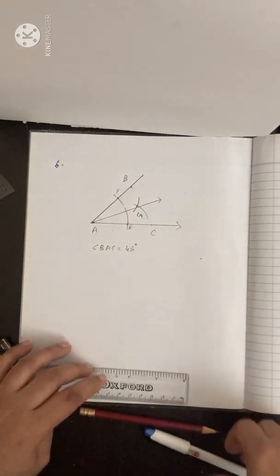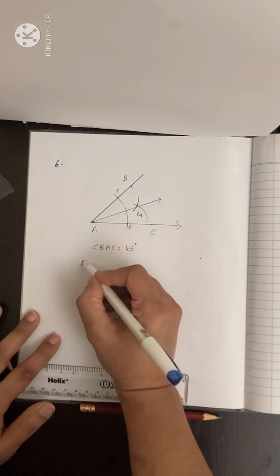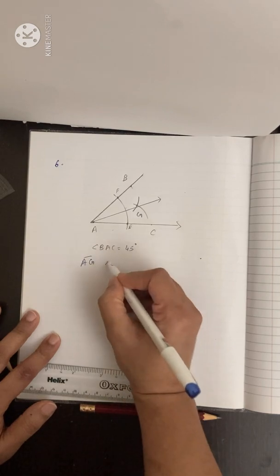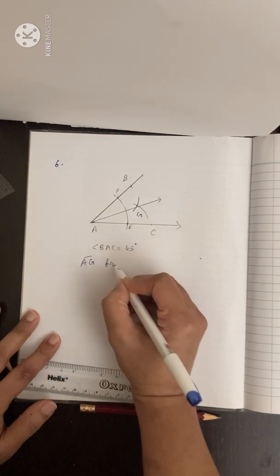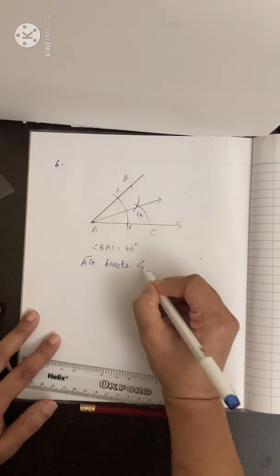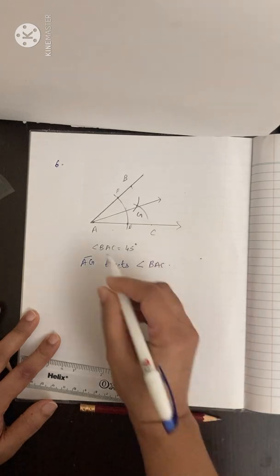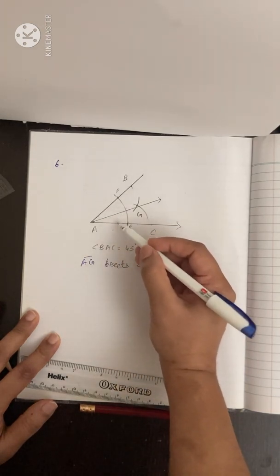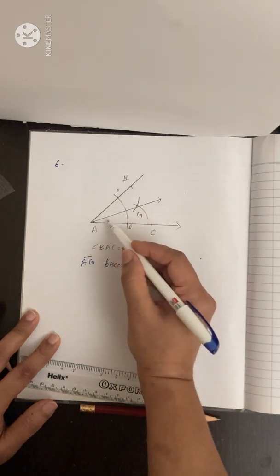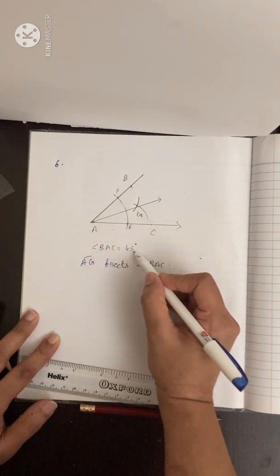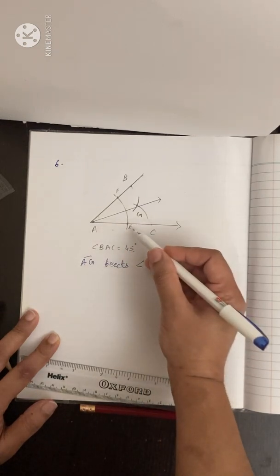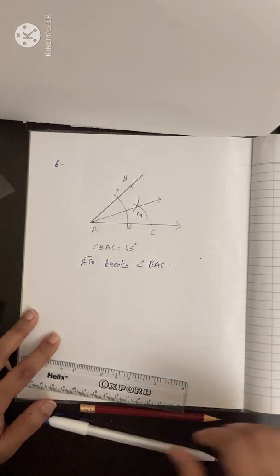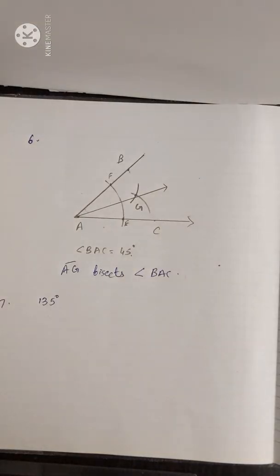Therefore line segment AG bisects angle BAC — bisects means it divides the angle into two equal parts. Each part should be half of 45 degrees, that is 22.5 degrees. Next, question number 7: draw an angle of 135 degrees and bisect it.